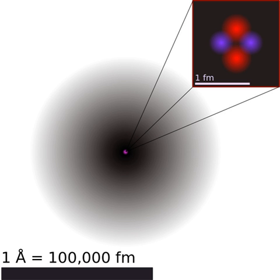This is only a crude approximation, but it can provide quantitative explanations and predictions for many phenomena, such as the density of liquids and solids, the diffusion of fluids through molecular sieves, the arrangement of atoms and ions in crystals, and the size and shape of molecules. Atomic radii vary in a predictable and explicable manner across the periodic table.